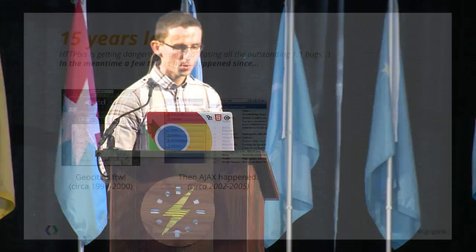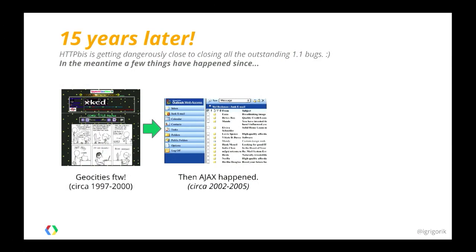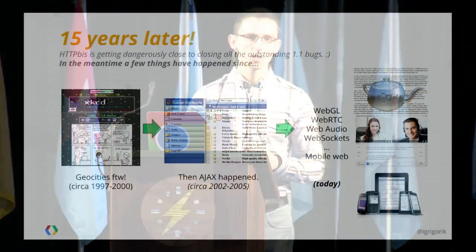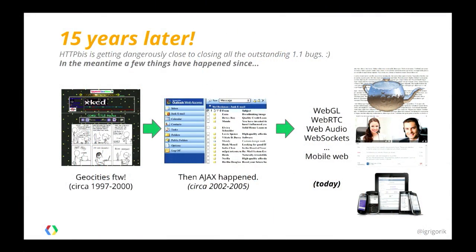Quite a few things have happened since. This protocol 1.1 was built in the age of GeoCities. This is even pre-dawn of the Ajax era — before the Outlook guys and IE gave us Ajax. This is way before then. Not to mention all the other crazy stuff that's currently in our browsers: WebGL, teapots in our browsers, WebRTC, P2P connections in a browser, WebSockets, the mobile web. None of this has affected what HTTP is. So literally 15 years have passed, and it's about time that we make some modifications.